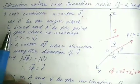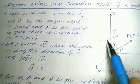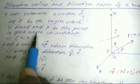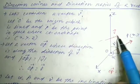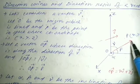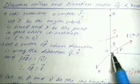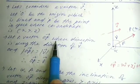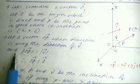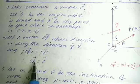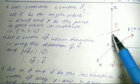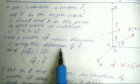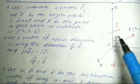Let us consider a vector V. Let O be the origin, which is fixed, and P be the point in space whose coordinate is x, y, z. Consider vector V to be the OP vector. If a vector has the same direction as OP vector and the same magnitude, then that vector equals the OP vector. Therefore, OP vector equals V vector.